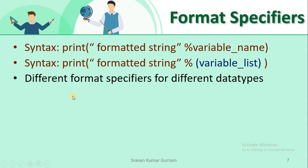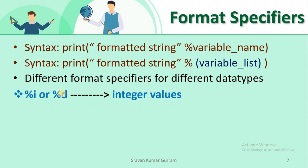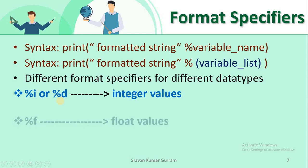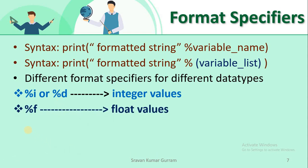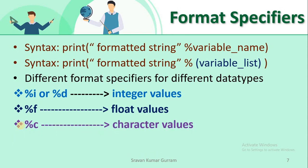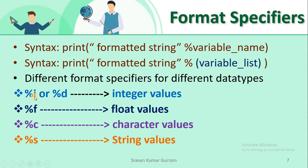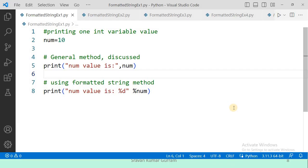The format specifiers for different data types are: to print integer values, use %i or %d; to print float values, use %f; to print character values, use %c; and to print string values, use %s. Now let us execute some programs so the topic will be clear.